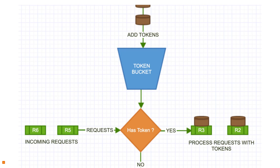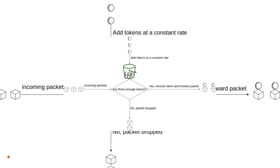We will have a token bucket which has a capacity and it cannot hold more tokens than that capacity. When a like request comes in, it consumes one token from the bucket. After five like requests are processed, five tokens will be consumed. If there are no tokens left, the like will not be processed. Five likes in a second means five tokens are consumed, and after that, whatever number of like requests the person sends will not be processed because there are no tokens left. We have to wait for the next second when the bucket will be refilled.